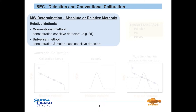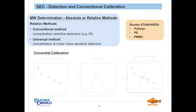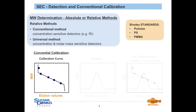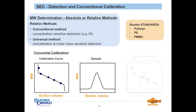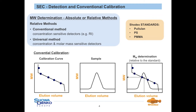The relative method can be divided into conventional and universal calibration methods. In the case of conventional calibration, only concentration sensitive detectors — in most cases RI detectors — are used. For universal calibration methods, concentration sensitive detectors are combined, preferably with viscometers which are molar mass sensitive detectors. For both calibration types, standards with known molecular weight and narrow molecular weight distribution have to be used. Shodex is also offering standards, i.e. pullulan for aqueous applications, and polystyrene and polymethylmethacrylate for applications in organic solvents. First, standards with known and different molecular weights are analysed and a calibration curve is created. In the second step the sample with the unknown molecular weight is analysed, and finally the molecular weight of the sample can be determined relative to the standard.